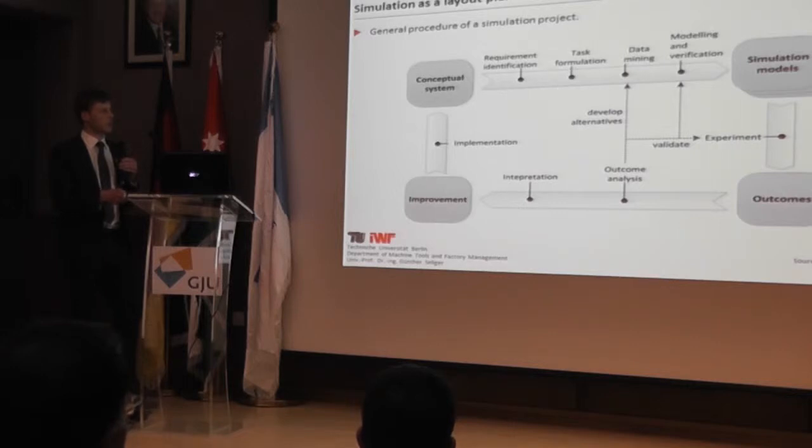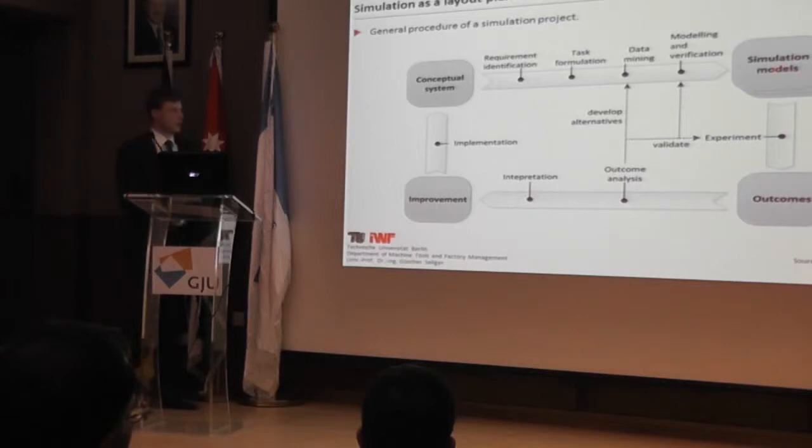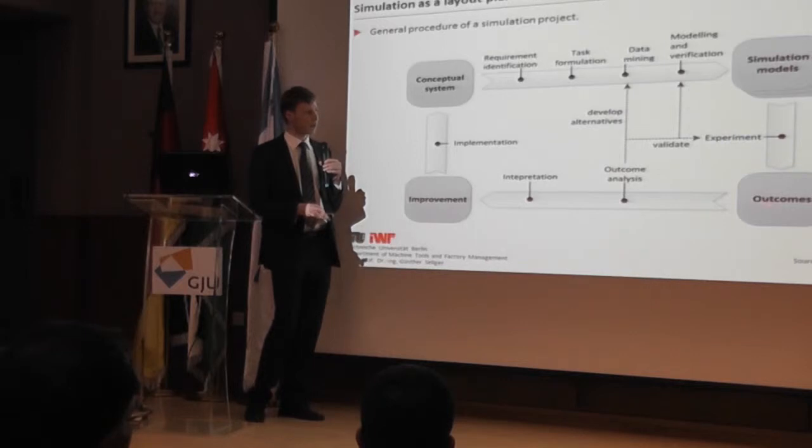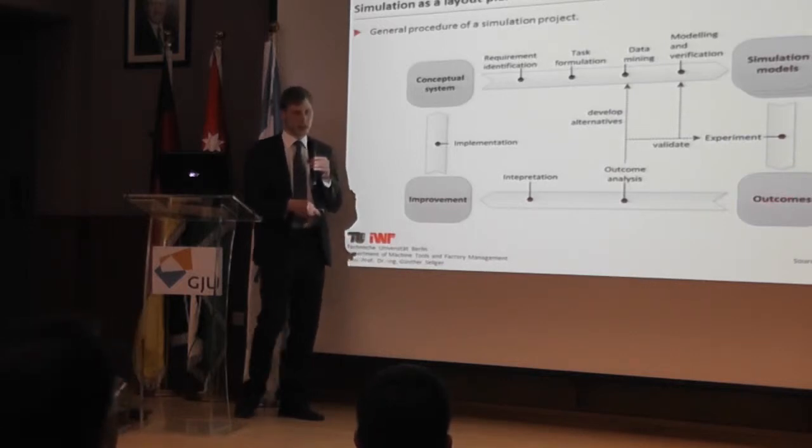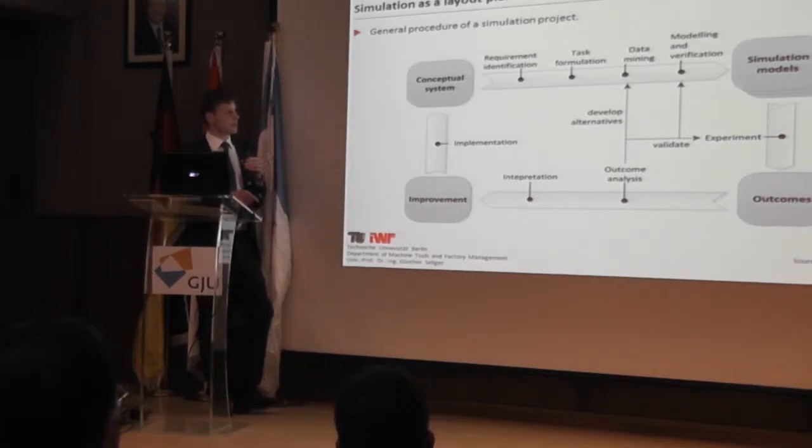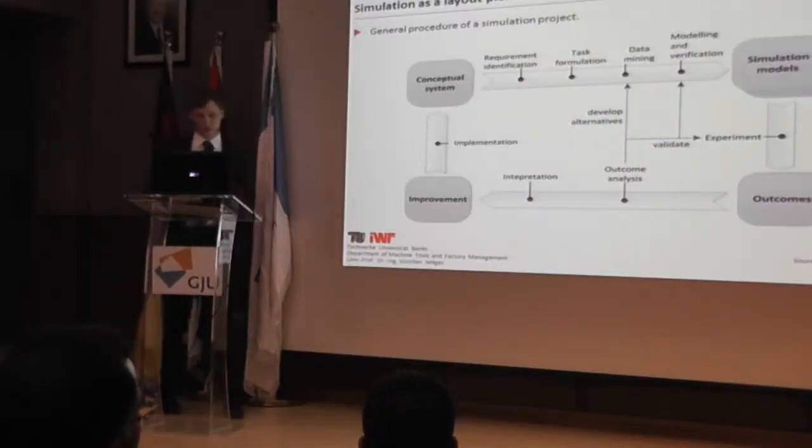Simulation is a tool that can be used for layout planning. You start by modeling your idea — going from a conceptual system through requirement identification and task formulation to a simulation model. By experimenting with the simulation model you get outcomes to analyze. Maybe the model has to be redesigned — for example, if one machine is not enough, you add a second and run the experiment again to reach a satisfying virtual factory, then implement that strategy in the real factory.